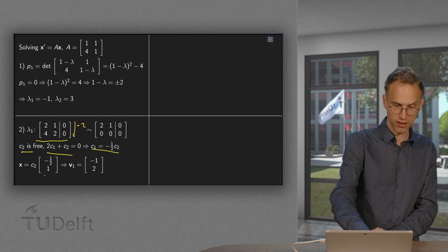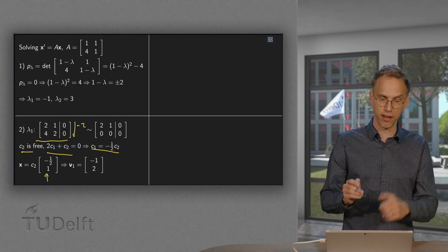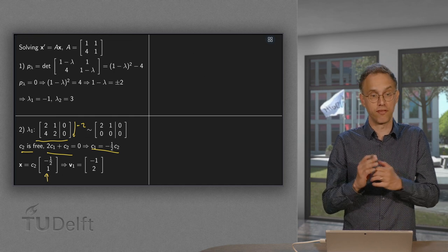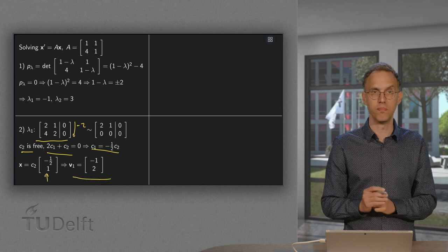Put them both in a vector. We get the vector x equals C₂ times (-1/2, 1). And we have our first eigenvector. If we take, for example, C₂ equals 2, we get our first eigenvector (-1, 2).